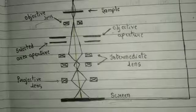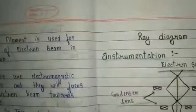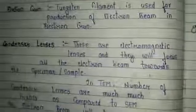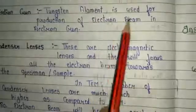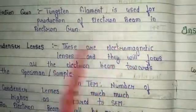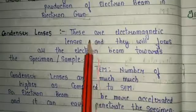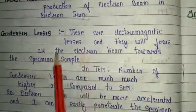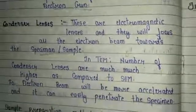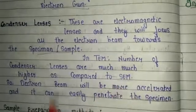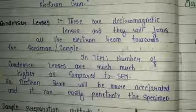First, the important part is the electron source — we use an electron gun to produce the electron beam. A tungsten filament is used to produce the electron beam in the electron gun. The second important part is the condenser lens. These are electromagnetic lenses and they focus all the electron beam toward the specimen sample. The number of condenser lenses in TEM is much higher compared to scanning electron microscopy, so the electron beam is more accelerated and can easily penetrate the specimen.